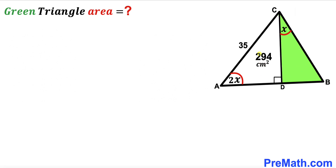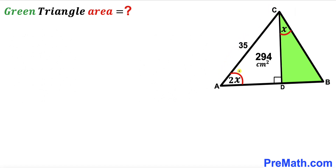The area of the white right triangle has been given to us as 294 centimeters squared, and its side length AC is 35 centimeters. Moreover, angle CAD is 2x whereas angle BCD is x, and our task is to calculate the area of the green shaded triangle BDC.